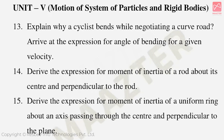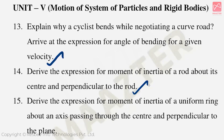Unit 5 Motion of System of Particles and Rigid Bodies — important five-mark questions: Explain why a cyclist bends while negotiating a curved road, and arrive at the expression for the angle of bending for a given velocity. Derive the expression for moment of inertia of a rod about its center and perpendicular to the rod. Derive the expression for moment of inertia of a uniform ring about an axis passing through the center and perpendicular to the plane.